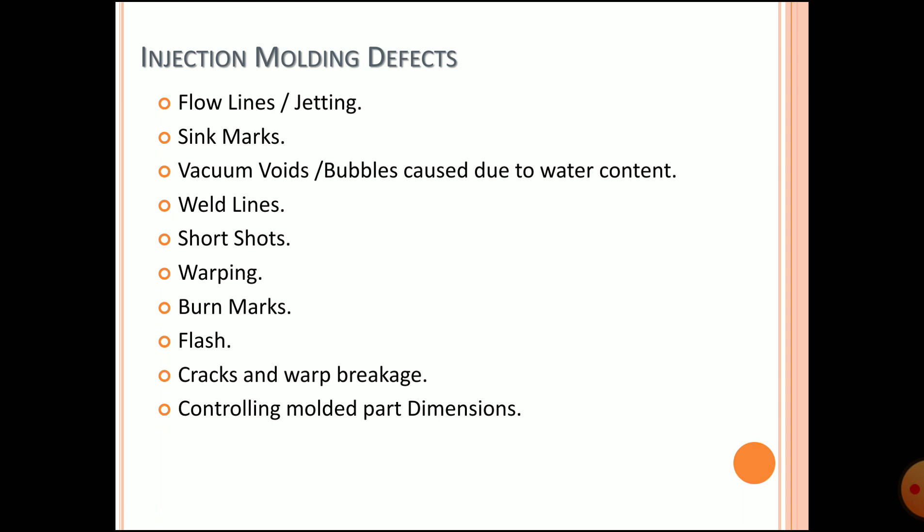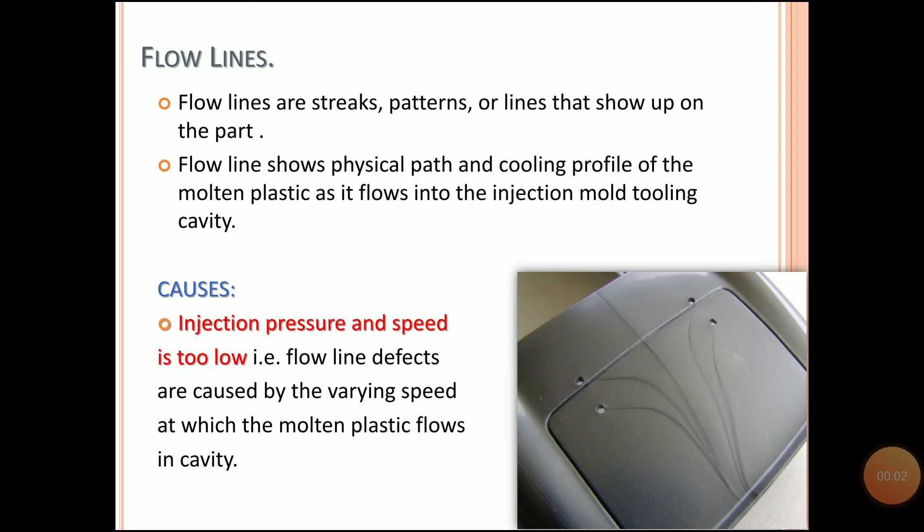Injection molding defects are listed as flow lines or jetting, sink marks, vacuum voids or bubbles caused due to water content, weld lines, short shots, warpage, burn marks, flashes, and tracks — as well as controlling the molded part dimensions. Let's see all the defects in detail.